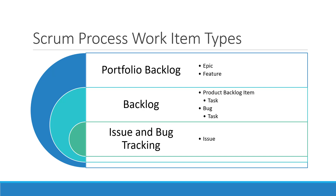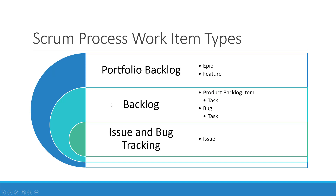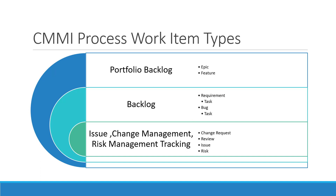Now let's see the Scrum process work item types. The Agile and Scrum process templates are similar — there are only a few terminology changes. In Scrum it is called a Product Backlog Item, while in the Agile process it is called a User Story. That's the only difference between the Scrum and Agile process work item templates.